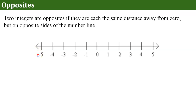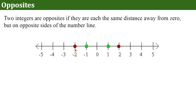Here's a number line. Negative 1 and 1 are both one unit away from 0 but on opposite sides, so they are opposites. Negative 2 and 2 are both two units from 0 on opposite sides, so they are opposites. Negative 3 and 3 are both 3 units from 0 on opposite sides, so they are opposites. Negative 4 and 4 are opposites, and negative 5 and 5 are opposites.